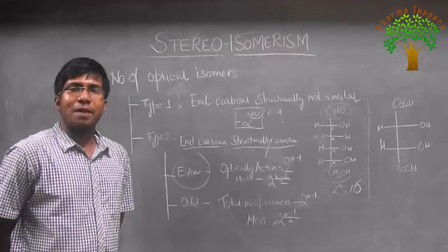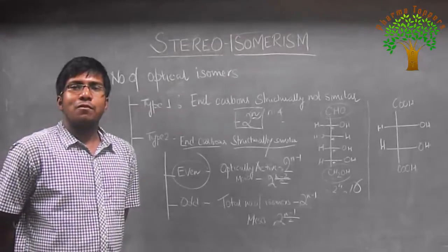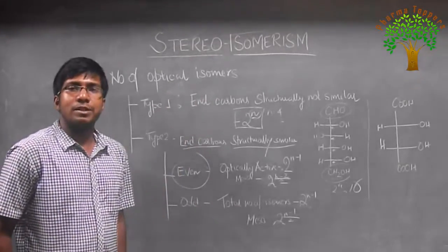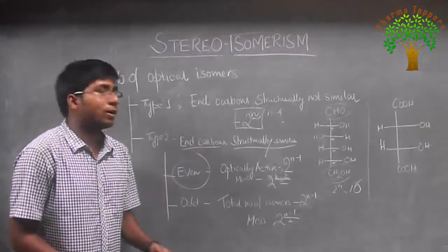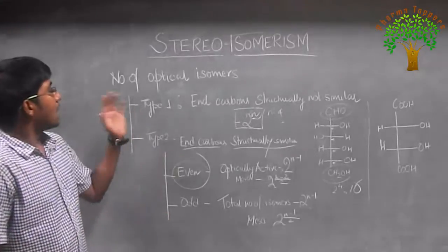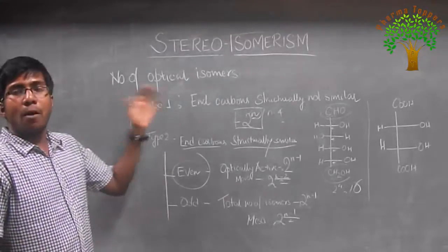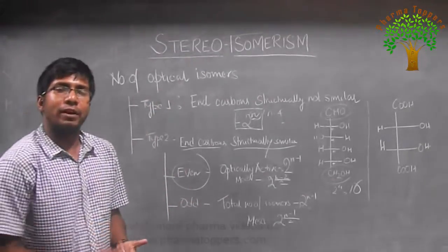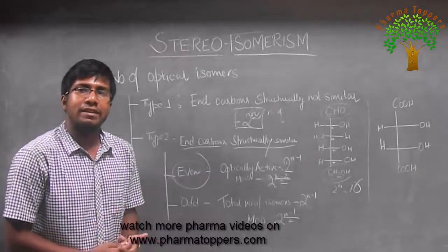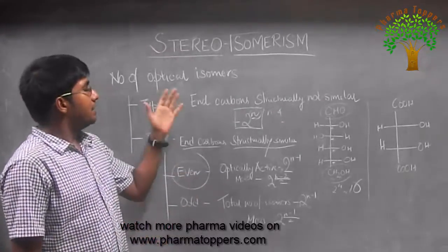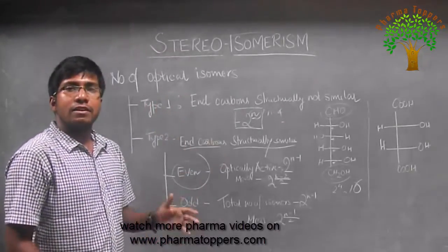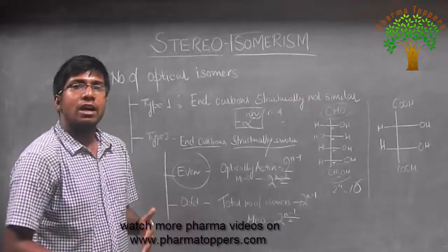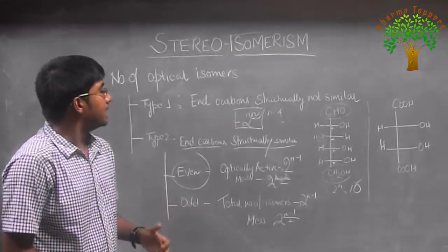Hi friends, welcome to Farmer Toppers. We are going to continue our discussion with CU isomerism, and now we will discuss a very important point: counting the number of optical isomers. It is definitely a very important question in entrance exams.